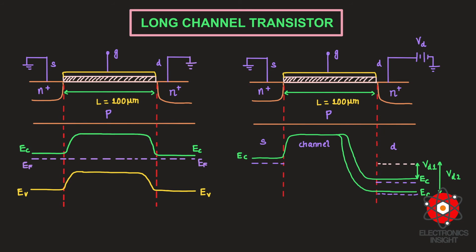The source side barrier gets modulated only when the gate voltage changes — with increasing gate voltage the source barrier decreases and electrons move from source to drain. In a long channel transistor, the source barrier is completely controlled by the gate-to-source voltage. The conduction of charge carriers depends on reducing the barrier at the source side, so drain-side variations do not affect carrier conduction, and drain current is completely controlled by the applied gate-to-source voltage.